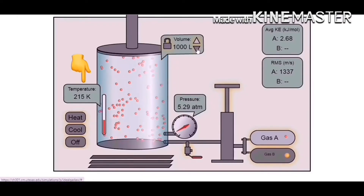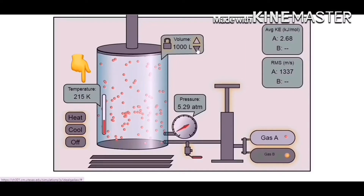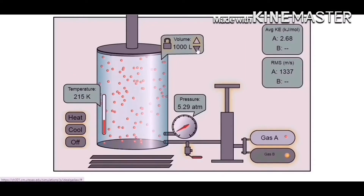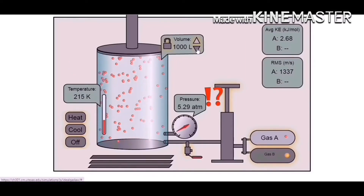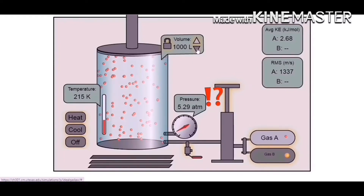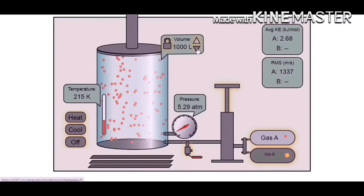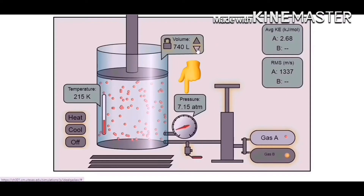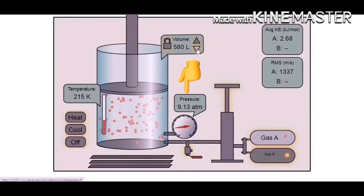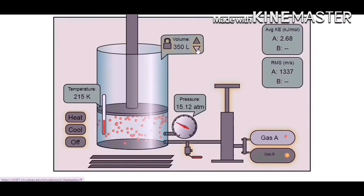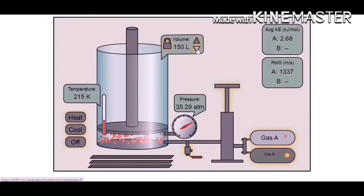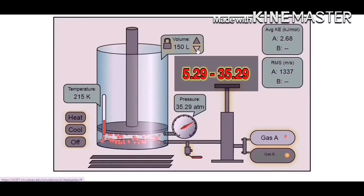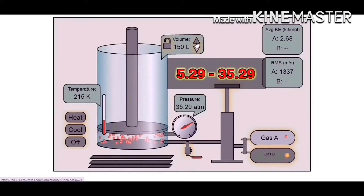Since we will keep the temperature constant, this means that we will not vary the temperature. Now, what do you think will happen to the pressure of the gas if we decrease the volume? Let's find it out. After decreasing the volume, we observed that the pressure increased from 5.29 atm to 35.29 atm.